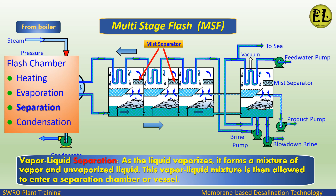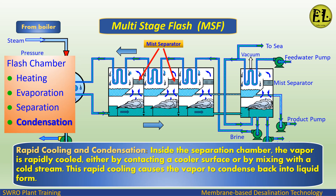This vapor-liquid mixture is then allowed to enter a separation chamber or vessel. Inside the separation chamber, the vapor is rapidly cooled, either by contacting a cooler surface or by mixing with a cold stream. This rapid cooling causes the vapor to condense back into liquid form.